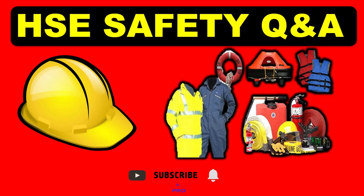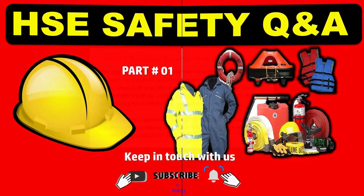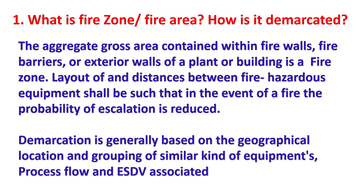HFC Safety Questions and Answers Part 1. What is a Fire Zone or Fire Area, and how is it demarcated? The aggregate gross area contained within firewalls, fire barriers, or exterior walls of a plant or building is a fire zone. Layout of and distances between fire hazardous equipment shall be such that in the event of fire, the probability of escalation is reduced. Demarcation is generally based on the geographical location and grouping of similar kind of equipment, process flow, and ESDV associated.